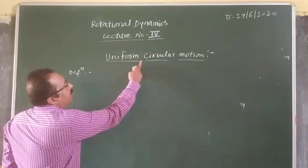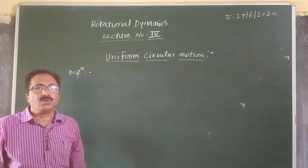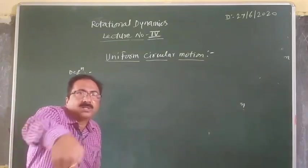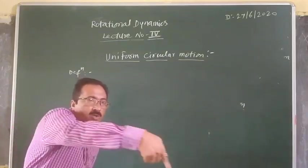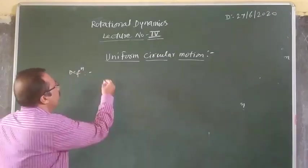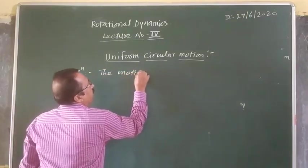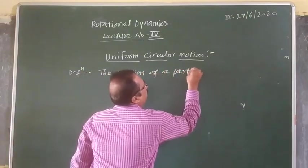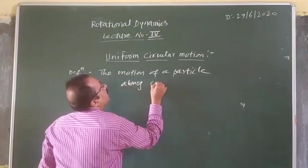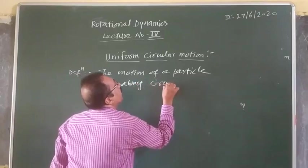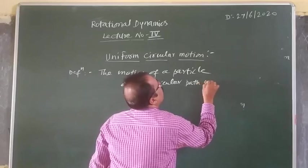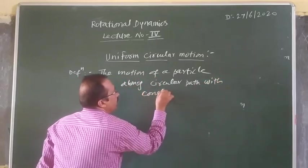So let us continue the uniform circular motion. What is uniform circular motion? If the particle is moving along the circular path, along the circumference of the circle, with constant speed.